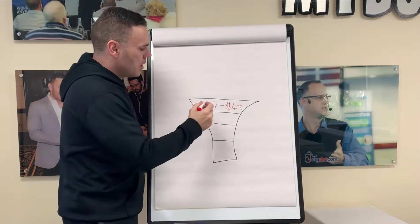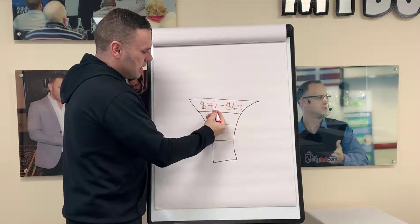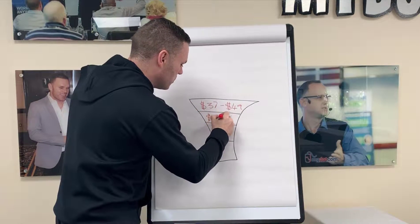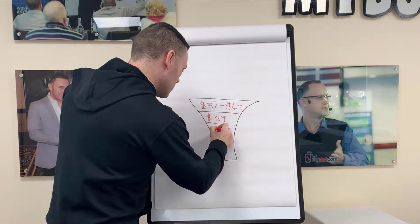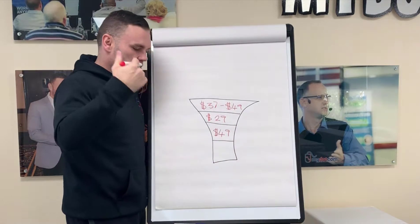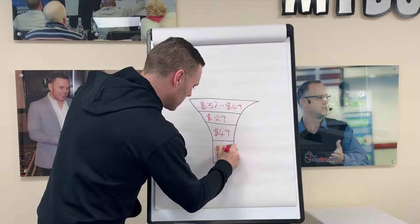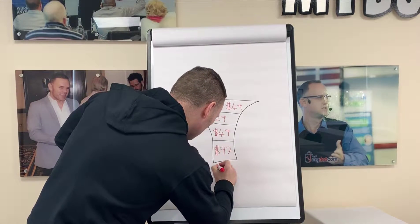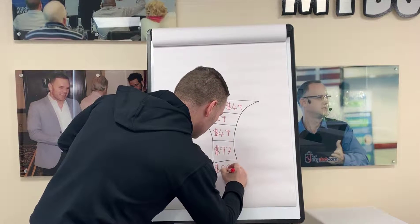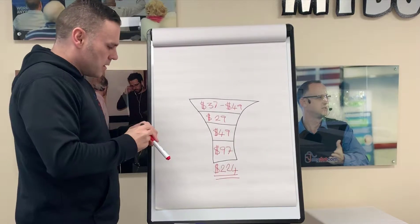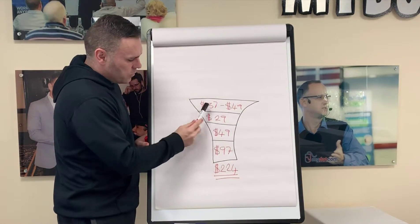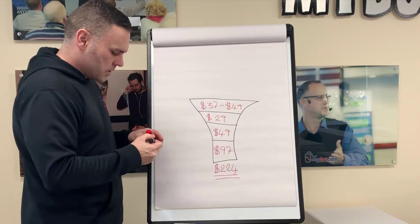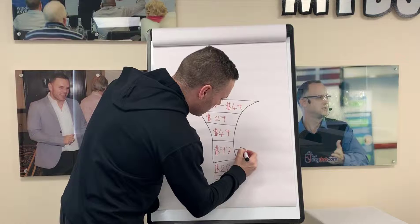Once the customer buys either the thirty-seven or forty-nine dollar option, they then get offered the next product in the sales funnel, which is twenty-nine dollars. Once they've bought the twenty-nine dollar product, they then get offered the next product which is forty-nine dollars. And once they've bought that, the final product is ninety-seven dollars. When we add all those prices together, it comes out at two hundred and twenty-four dollars. When a customer buys all four levels, we call that a full ball — they bought everything and we get two hundred and twenty-four dollars in profit.